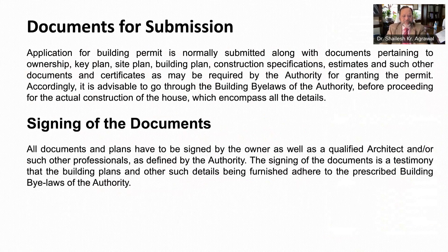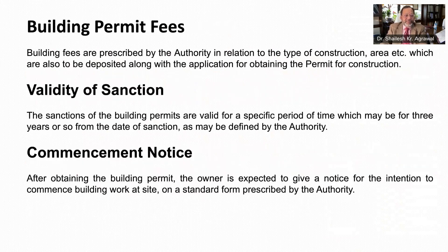The application for building permit is to be submitted along with the building plans — site plans, key plans, construction specifications, and estimates — along with documents pertaining to ownership and any other document or certificate deemed appropriate by the authority. All documents need to be signed by not only the owner but also by the architect or professional as defined by the authority. Building fees prescribed by the authority are to be deposited along with the application form. After due diligence, the authority issues the building certificate, which is valid for a specific period of time — normally three years, but may be defined by the authority.